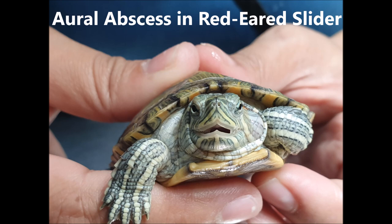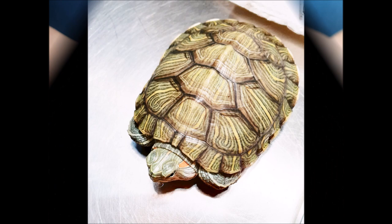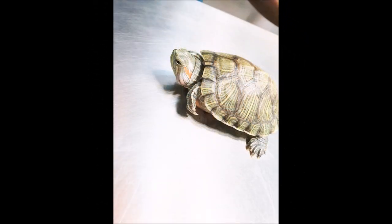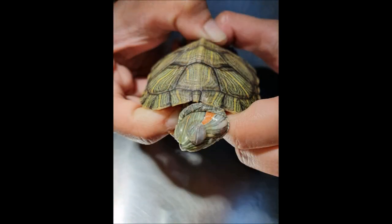In this video you will learn what is aural abscess, the causes, and the treatment. This six-month-old red ear slider came in because the owner noticed that the sides of the head were swollen. The swollen area is where the ears are located. The swelling is caused by exudates or pus that forms within the ear canal, pushing the skin, often causing the red ear slider to stop eating and feel discomfort.